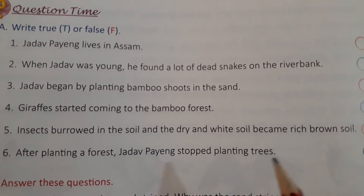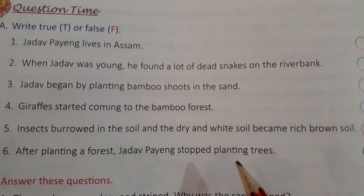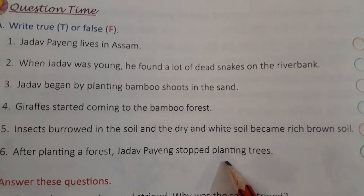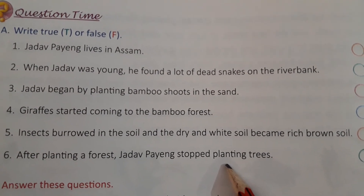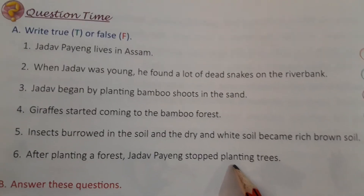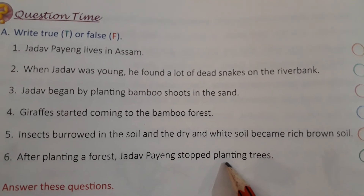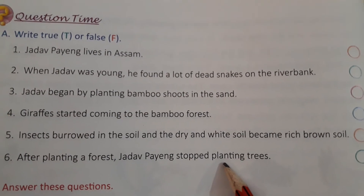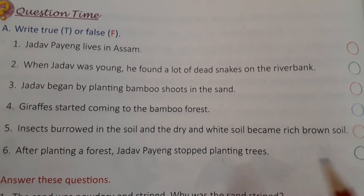Last sentence, six: After planting a forest, Jadav Payeng stopped planting trees. तो जादव पाएंग जी ने जब एक जंगल लगा लिया था, थोड़े थोड़े पौधे करके, तो क्या उन्होंने पेड़ लगाना बंद कर दिया था? नहीं — यहाँ पर आएगा False.